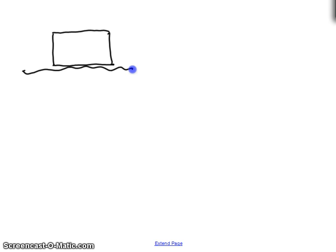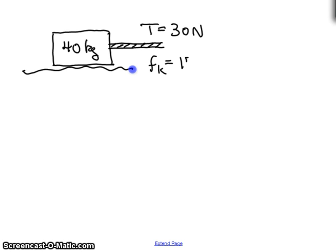Let's say we have a 40 kilogram object being pulled along by a rope, and the tension on the rope is equal to 30 newtons. The ground is rough, and the friction it has, we'll give an actual value, will be 17 newtons.